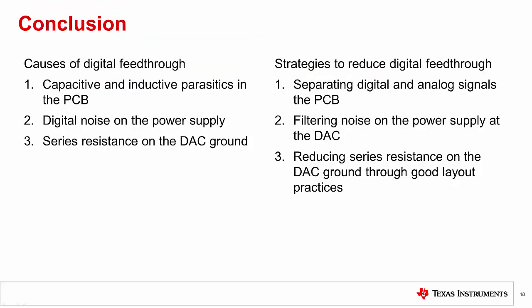In conclusion, the primary causes of digital feed-through are: capacitive and inductive parasitics on the PCB layout between digital and analog signals; digital noise carried into the DAC through the power supply; and series resistance on the DAC ground that digital return current must pass through. These problems can be minimized by geographically separating digital signals from key analog signals during PCB layout, by filtering high-frequency noise on the DAC power supply using a good supply decoupling scheme, and by reducing series resistance on the ground pins of the DAC using short, direct ground connections and separating digital return paths from analog return paths.